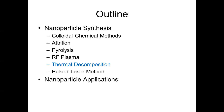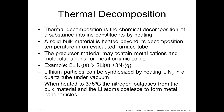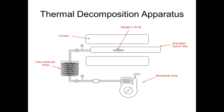Now let's take a look at a similar system: thermal decomposition. Thermal decomposition is the chemical decomposition of a substance into its constituents by heating. A bulk material is heated beyond a decomposition temperature in an evacuated furnace tube. The precursor material may contain metal cations and molecular anions or metal-organic solids. For example, lithium particles can be synthesized by heating lithium nitride in a quartz tube under vacuum. When heated to around 375°C, the nitrogen outgasses from the bulk material and lithium atoms coalesce to form nanoparticles.